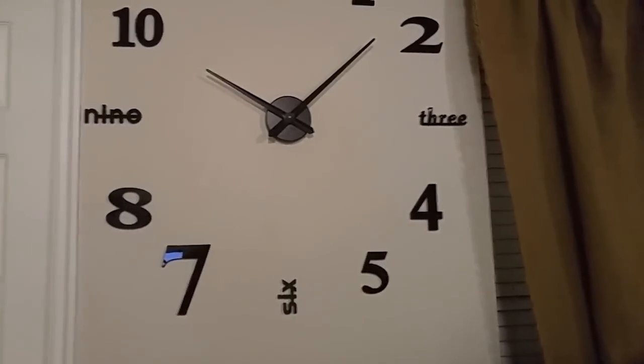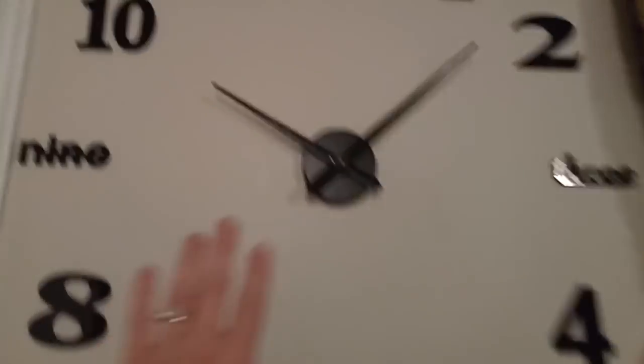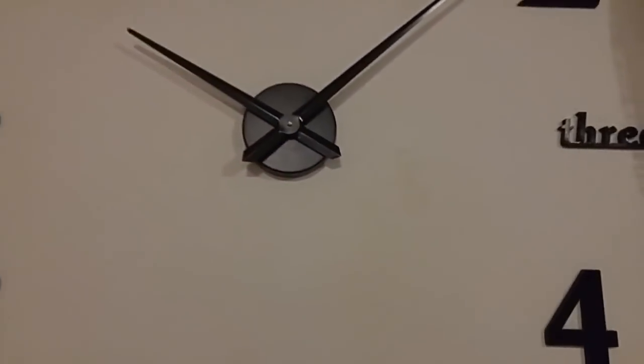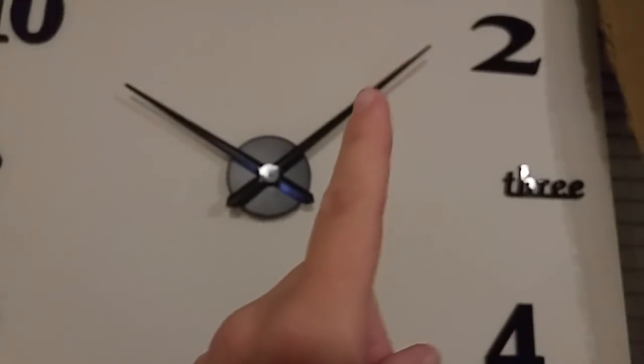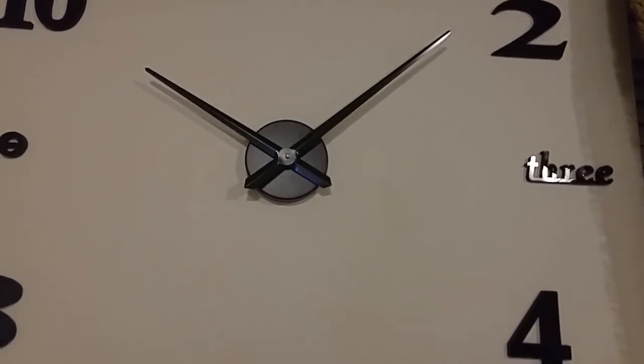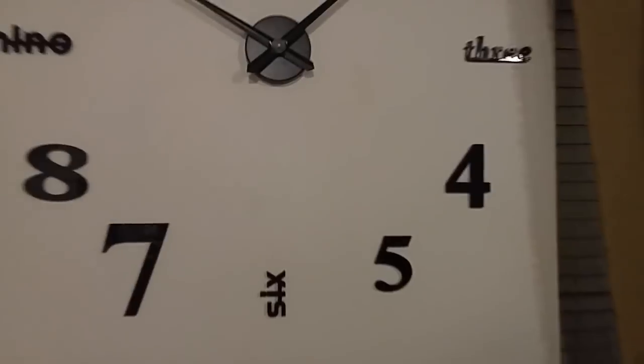Now this middle piece right here just pops off the wall so you can change the battery, put it back on. And then you have the hour hand that goes on the bottom and the minute hand that goes over top and you can kind of tell, you can kind of see it like vibrating as it's slowly moving so you know that it's keeping time.